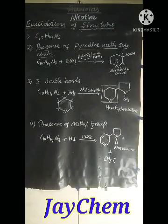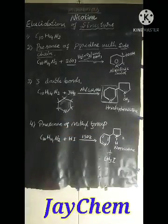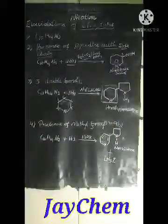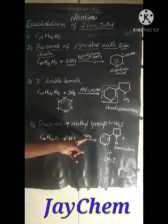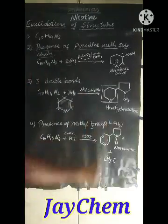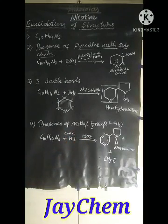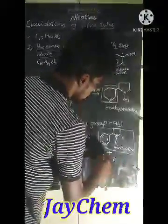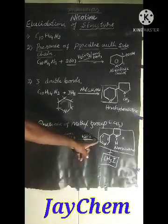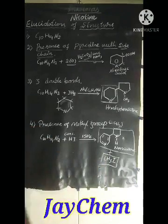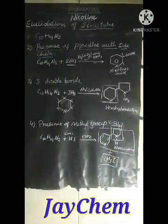Next is the presence of a methyl group. Nicotine is heated with concentrated hydrogen iodide at 150 degrees Celsius. Nornicotine and methyl iodide are formed. This reaction shows the presence of a methyl group in the side chain.